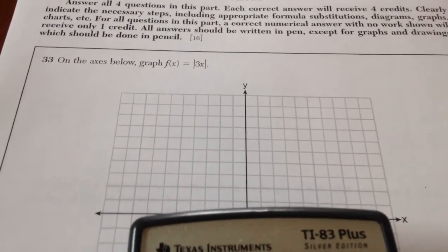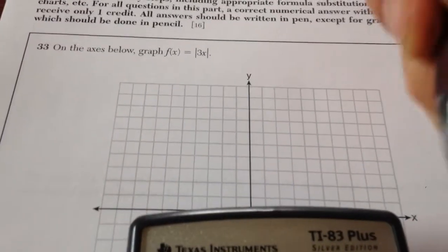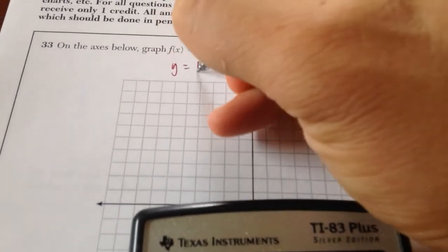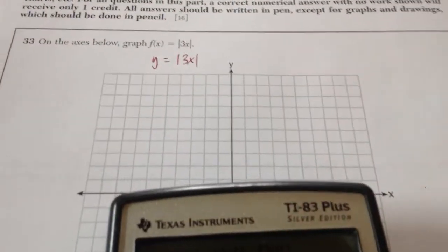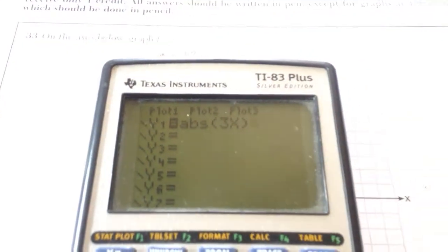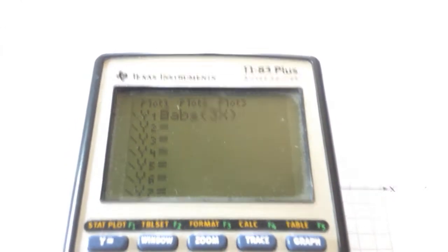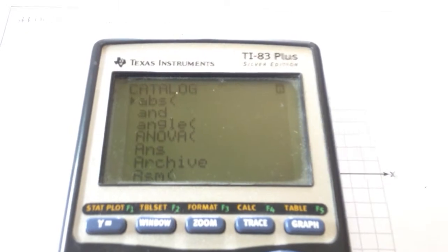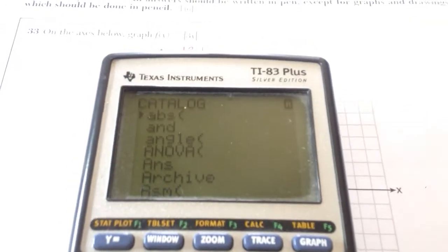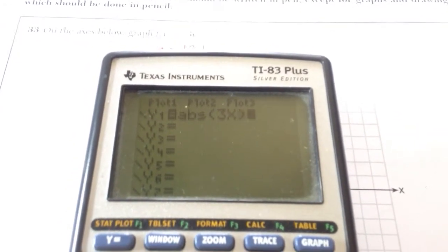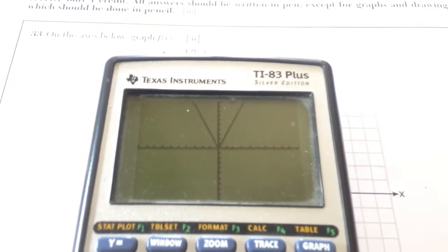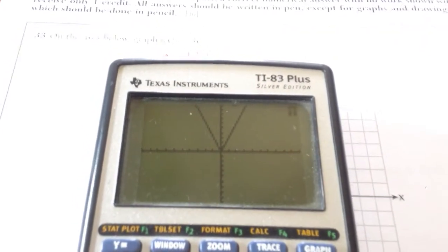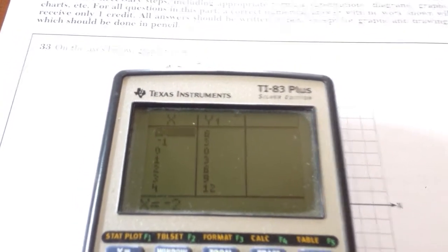Number 33, they want you to graph basically y equals the absolute value of 3x. So what I'm going to do is I'm going to put that in my calculator as the absolute value of 3x. Let's review how to get that. I hit second, zero, which takes me to catalog. Abs is my first choice, and then I type in 3x. I'm going to go to graph.